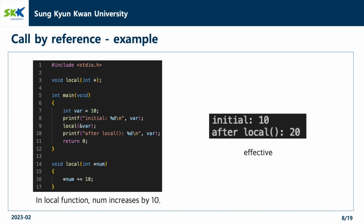Let's see with the example code. In the main function, we pass the address of a variable var to the function local. The function local should receive the address of a variable as an argument, so when we declare the function, the type of the parameter should be a pointer type. In the local function, the value of the variable num increases by 10. Since we passed the address of the variable, increasing the num value is effective on the original variable var which is declared in the main function. So, as you can see in the result, the value of the variable is increased from 10 to 20.